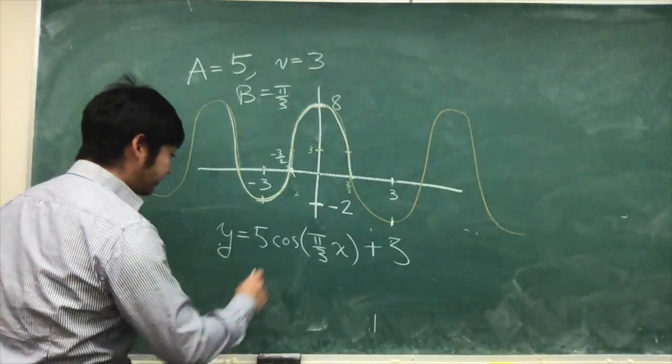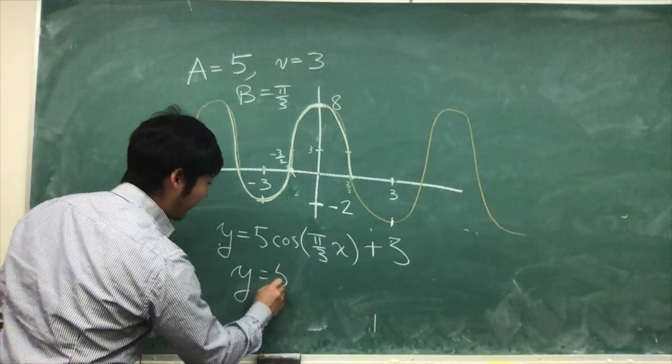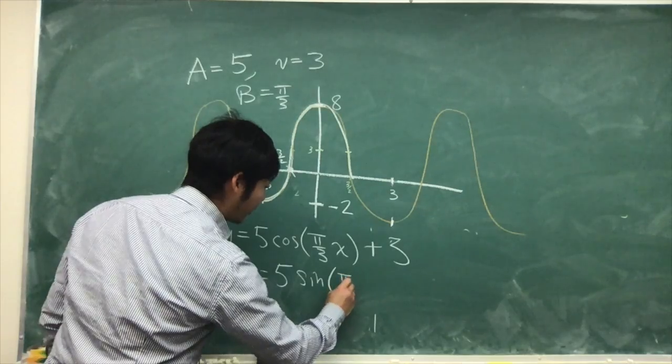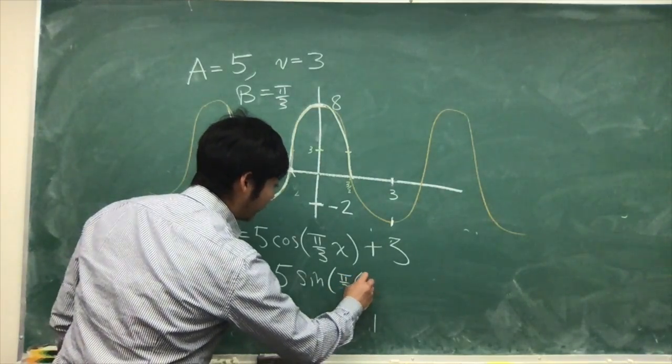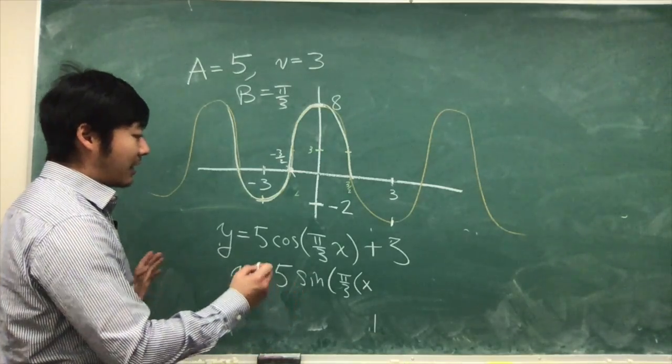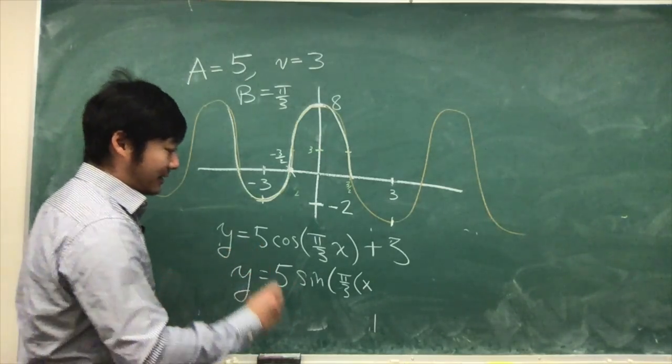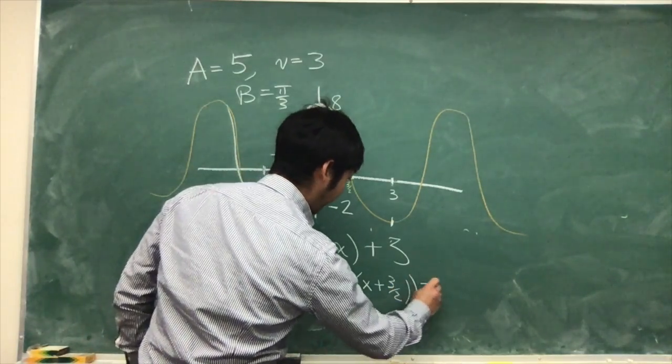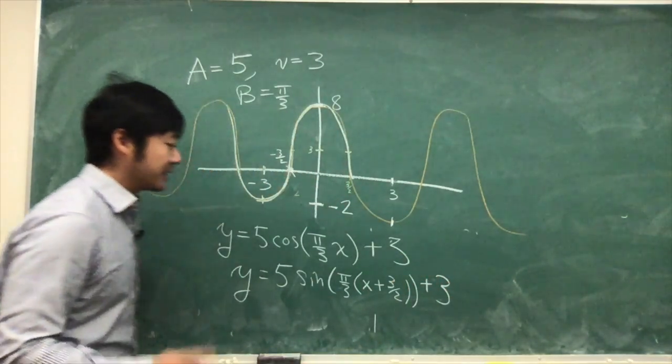This will be y equals 5 sine of π over 3 times the quantity (x plus 3/2), plus 3. When we shift to the left, we add it, and the vertical shift stays the same.